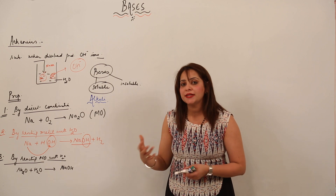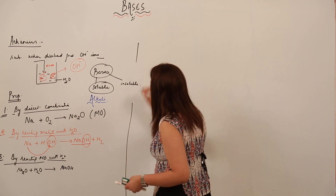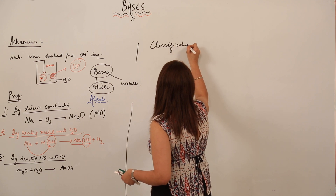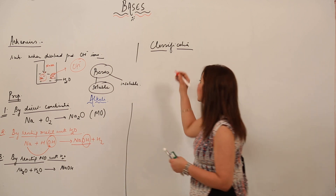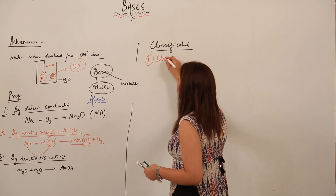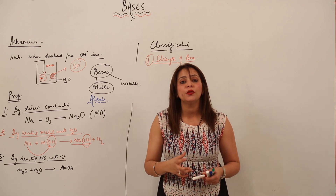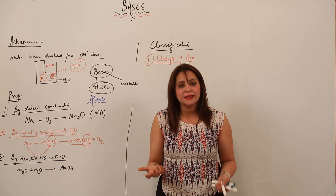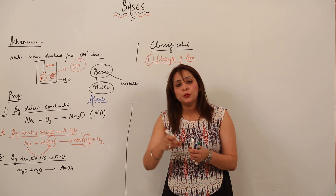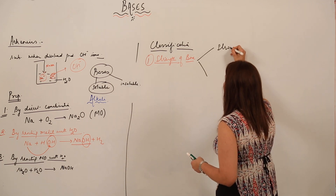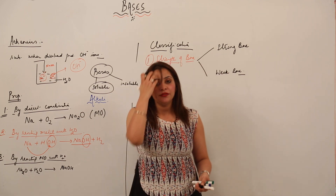Now we are going to classify bases, just as we classified acids. The first classification is on the basis of strength. Strength of a base means the ability of a base to release hydroxide ions when dissolved in water. On this basis, bases are divided into two categories: strong base and weak base.